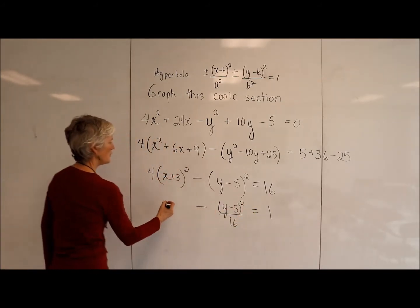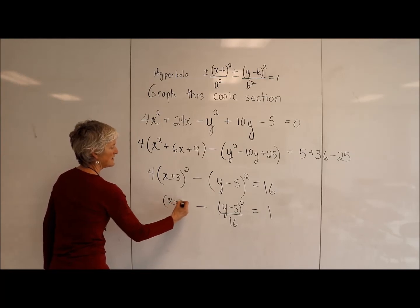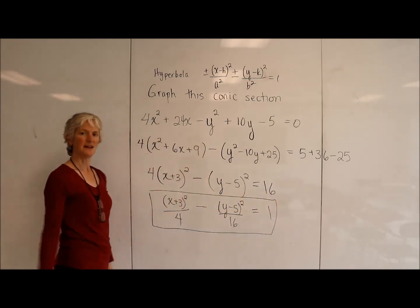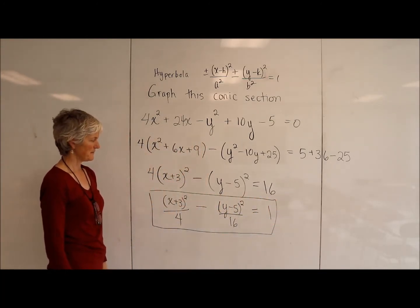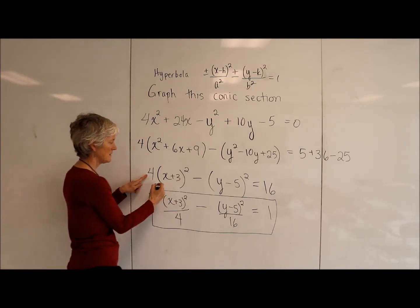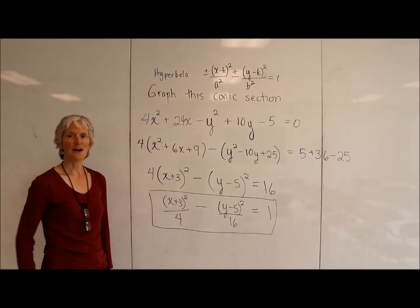And lo and behold, if I divide everything by 16, I have my hyperbola in a shape that I can graph it nicely. Everybody see how I did that? 4 divided by 16 is 1 over 4. Okay, here we go.